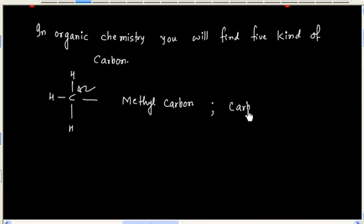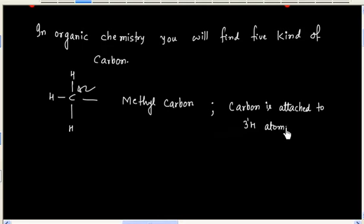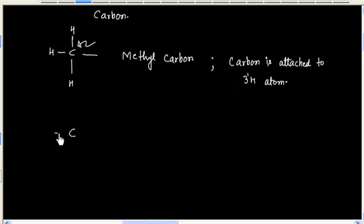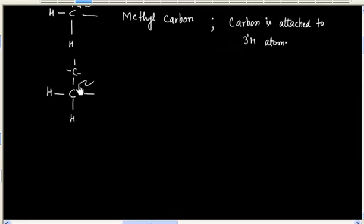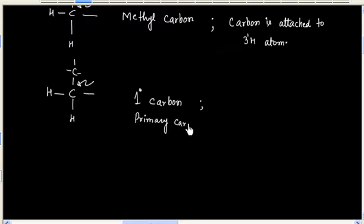So the carbon is attached to 3 hydrogen atoms. Now this carbon is called 1 degree carbon, or primary carbon. In the case of primary carbon, carbon is attached to 1 carbon and 2 hydrogens.